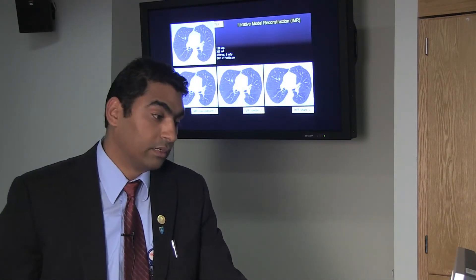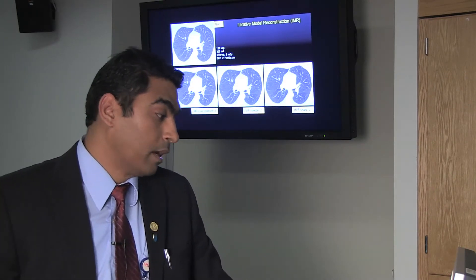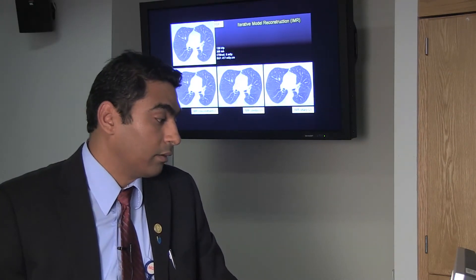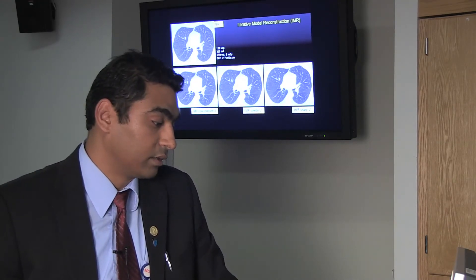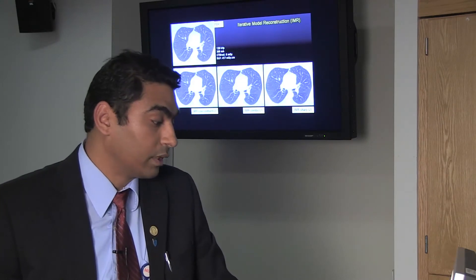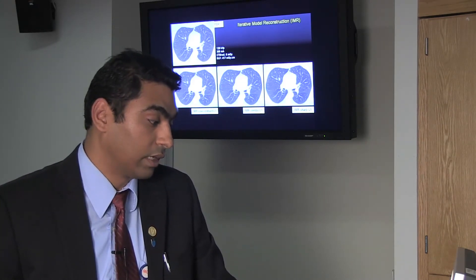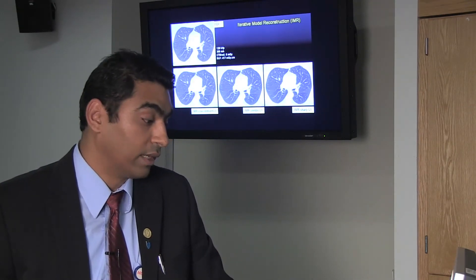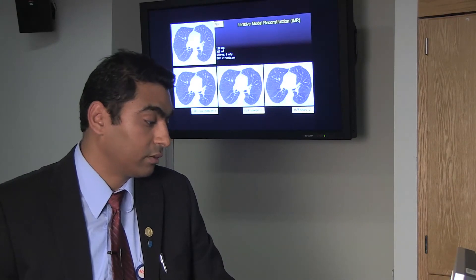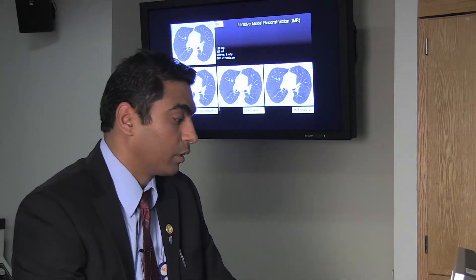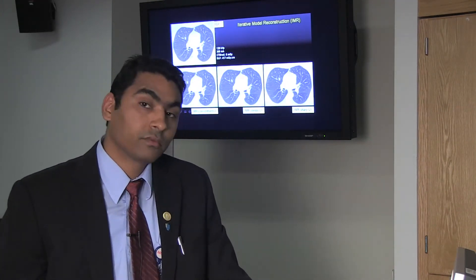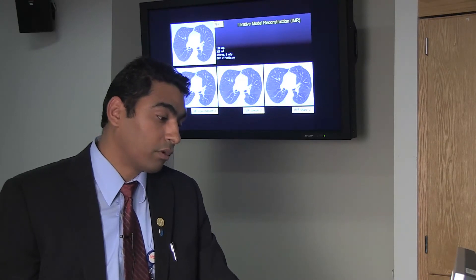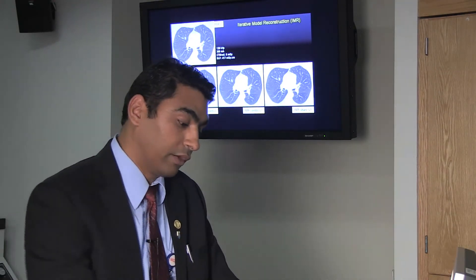Now let's look at Philips' iterative model reconstruction, commonly known as IMR. A patient was scanned at 120 kV, 300 mA, CTDIvol of 8 mGy, and reconstructed with filtered back projection. The same raw data was then reconstructed with different IMR settings: low contrast, combo, and sharp — each with noise reduction levels L1, L2, L3. Looking at the posterior lung parenchyma where streaks come from the vertebral body, with low contrast settings the streaks remain, with combo they almost disappear, and with sharp setting they are completely gone. So it's very important to select the right algorithm setting to achieve the desired image quality.